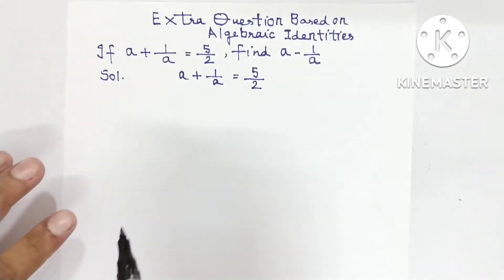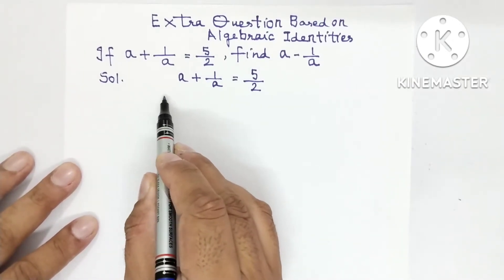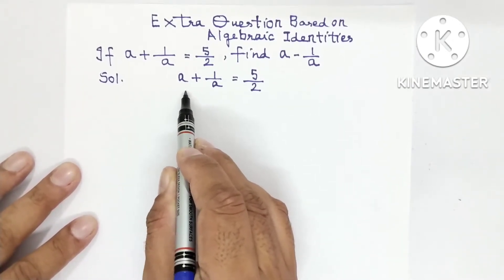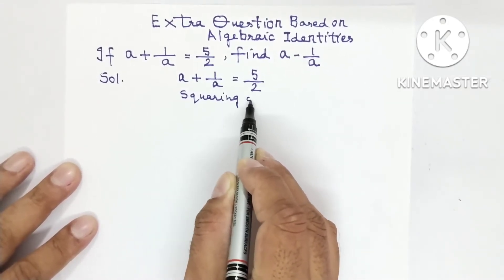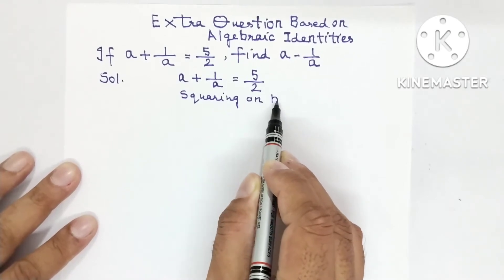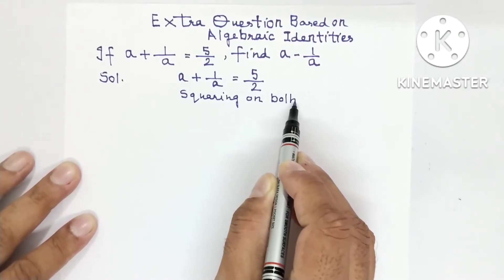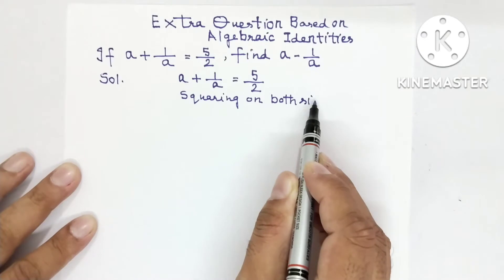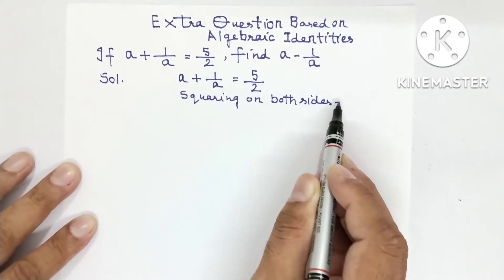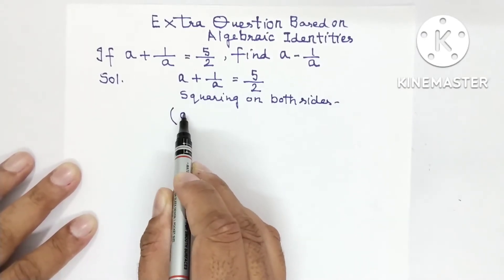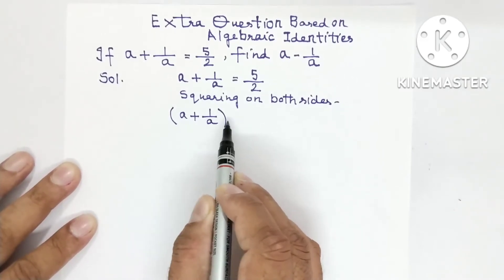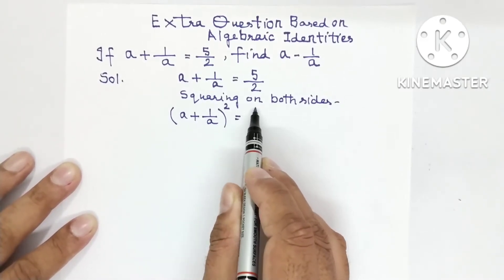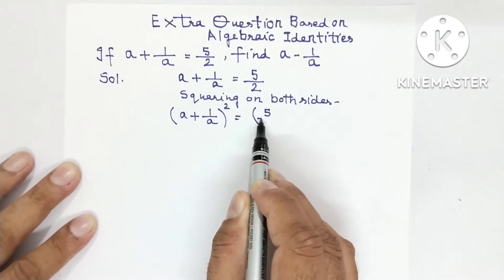So what will be done in this question? You will do squaring on both sides. So this is (a + 1/a)² equal to (5/2)².